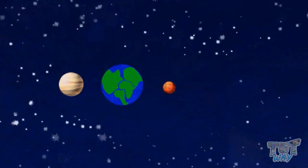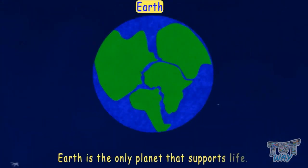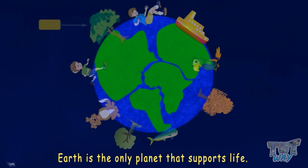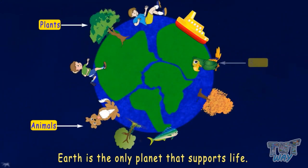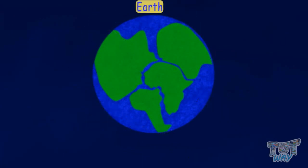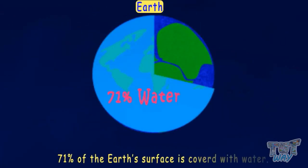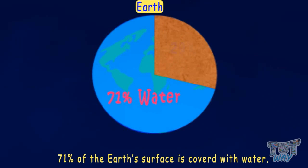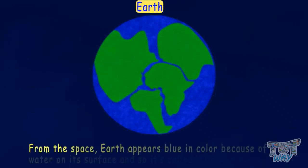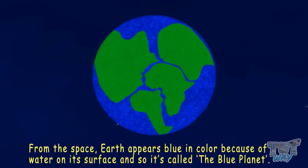Earth is the only planet that supports life, such as plants, animals, birds, and trees. All human beings can live on this Earth. 71% of the Earth's surface is covered with water, and the rest is covered with land.